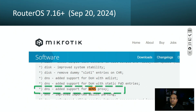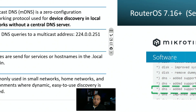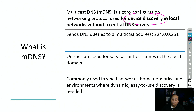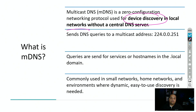mDNS has been introduced in RouterOS 7.16 and above. Multicast DNS is a zero-configuration networking protocol used for one specific purpose: device discovery in local area networks. For example, if you go to your laptop and try to add a new printer, your laptop will start sending mDNS messages to find that printer in the local area network.